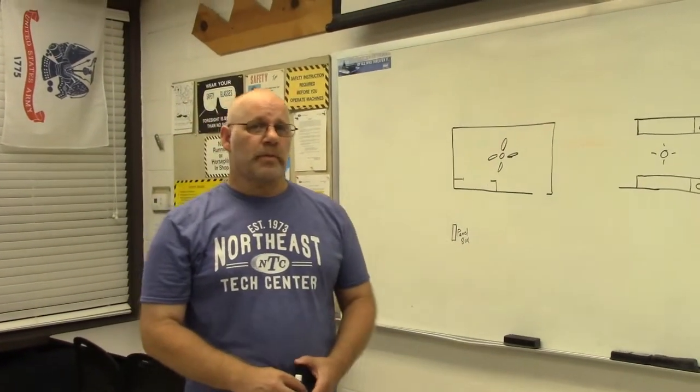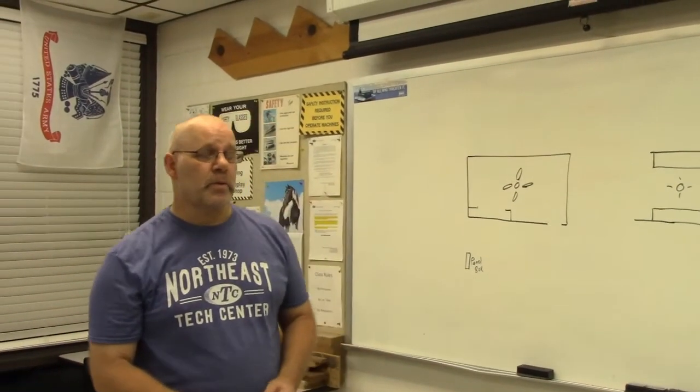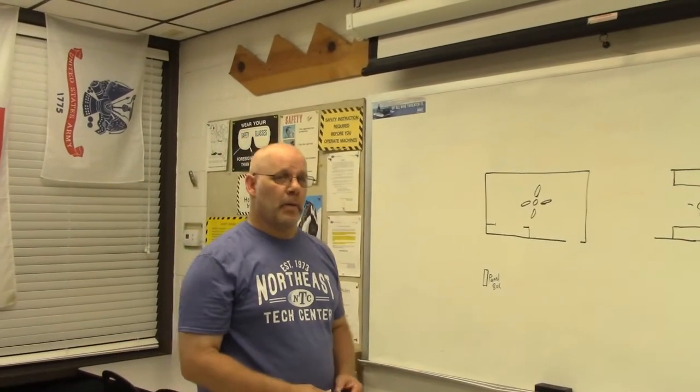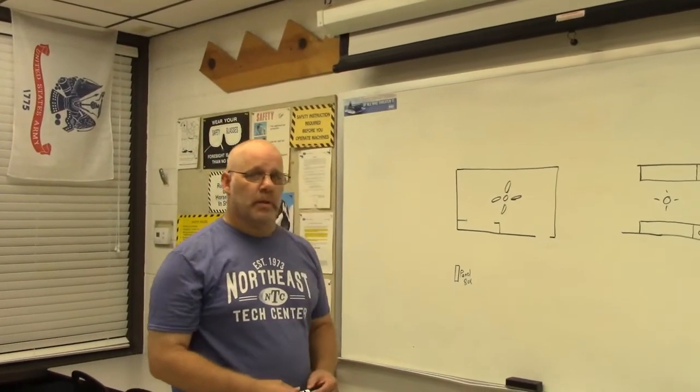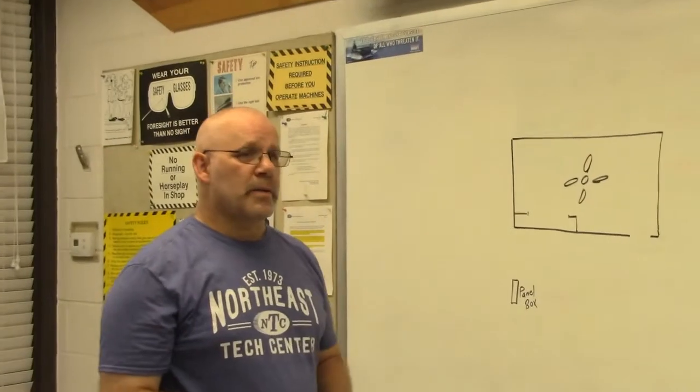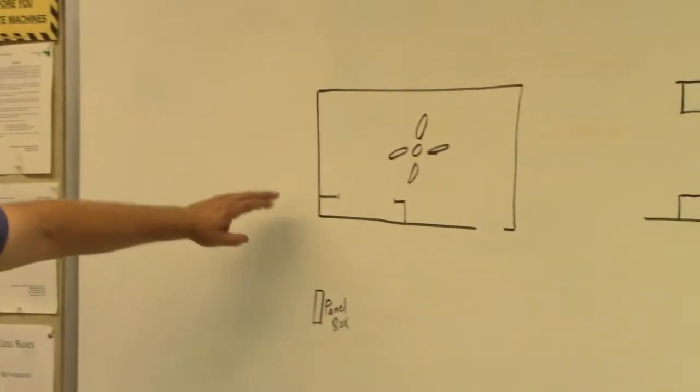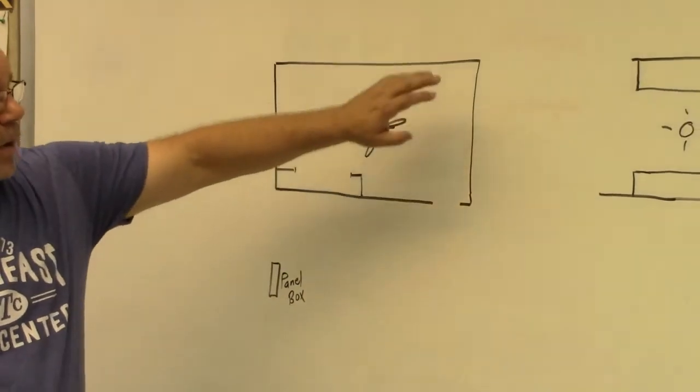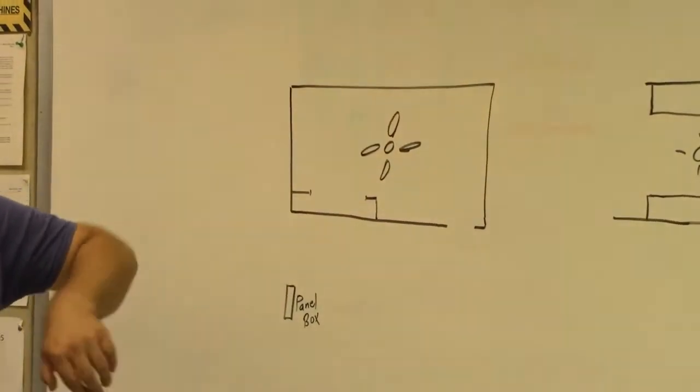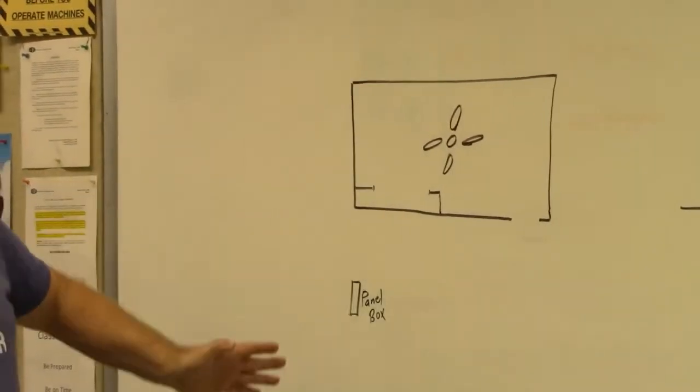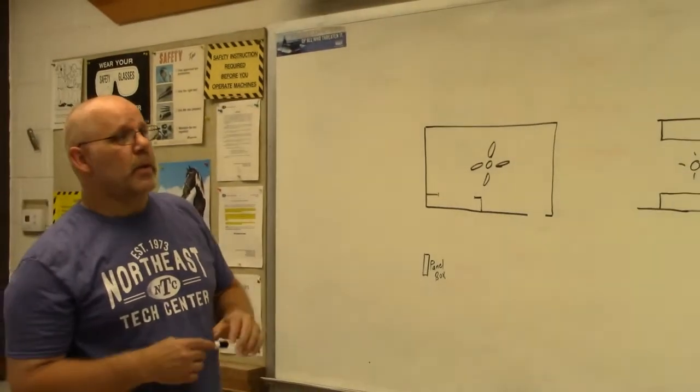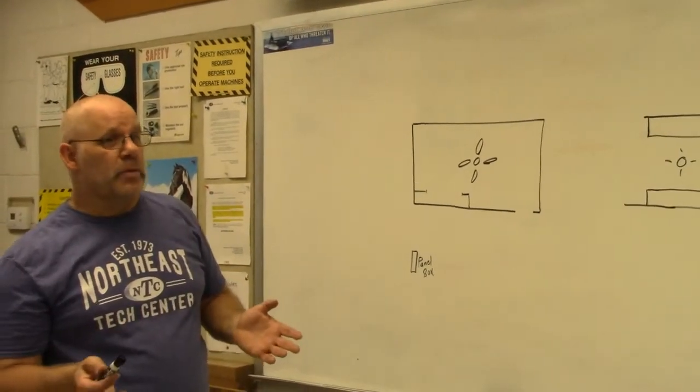So today we're going to figure out and talk about circuits in a house. What is a circuit? A circuit is a wire that's going to run from a panel box to a plug to a plug to a plug to a light switch. That's a circuit. So we'll explain a little bit about circuits.